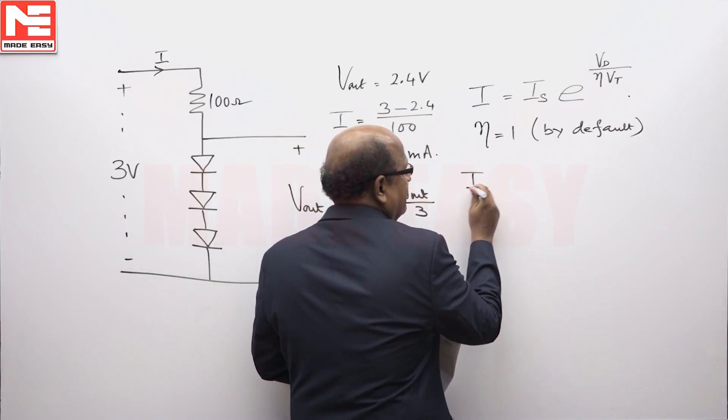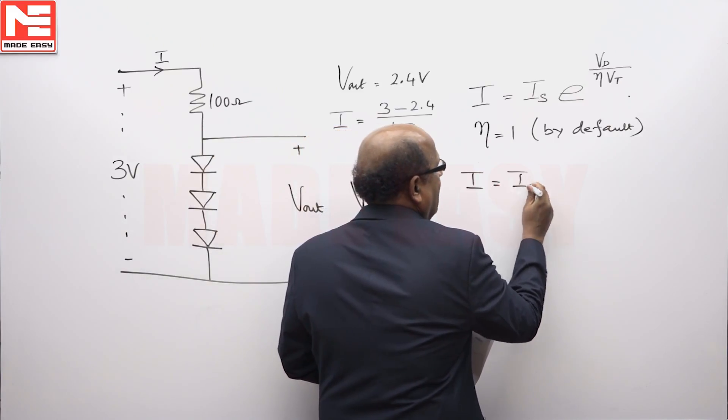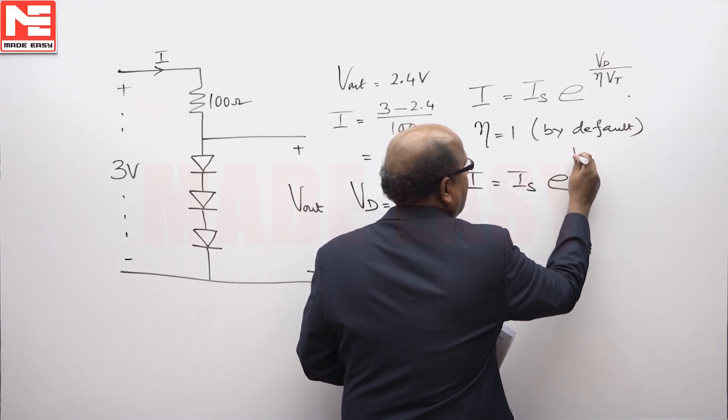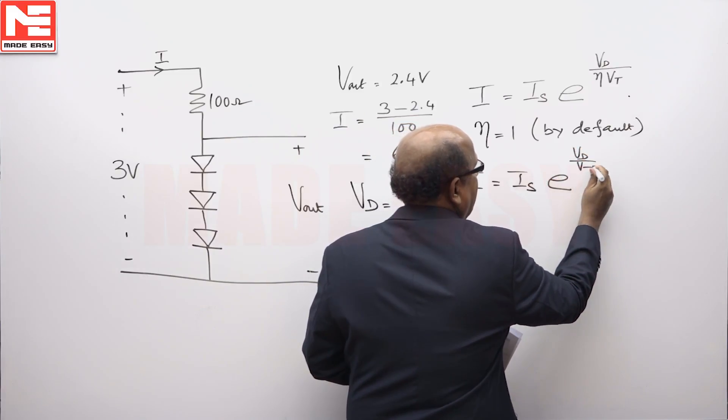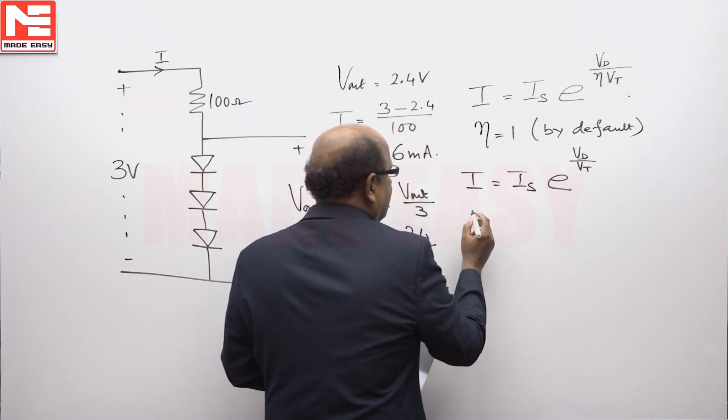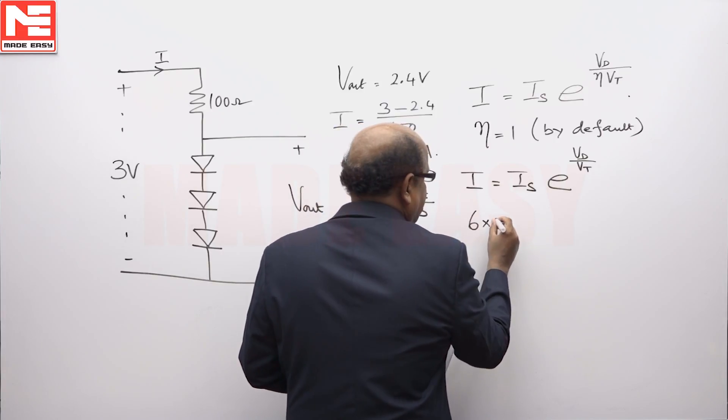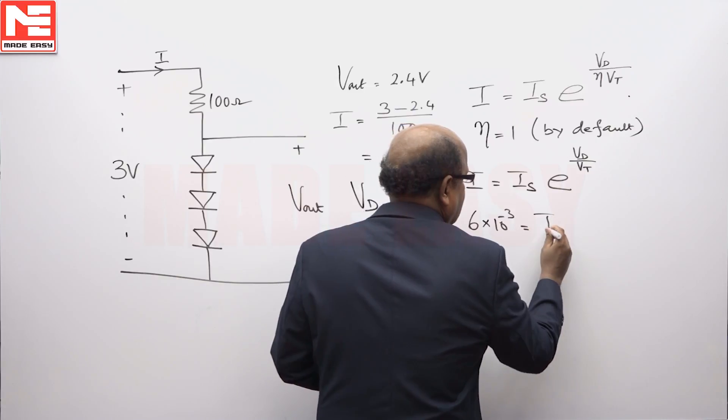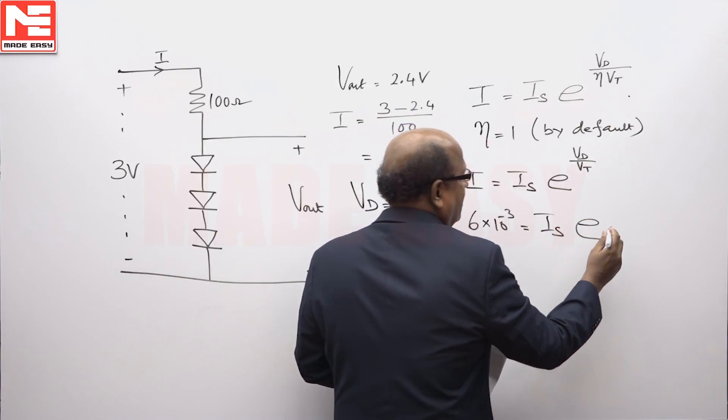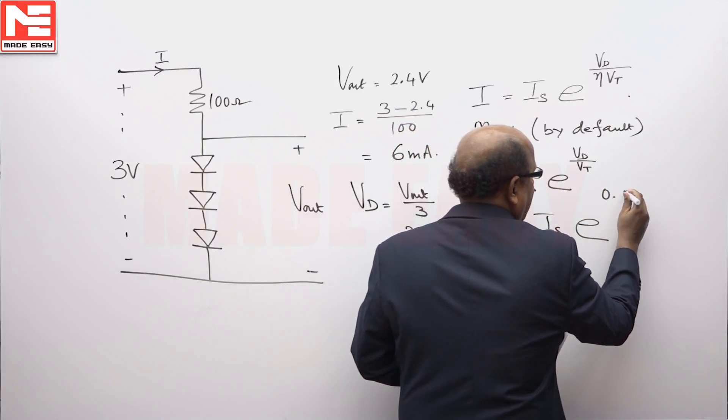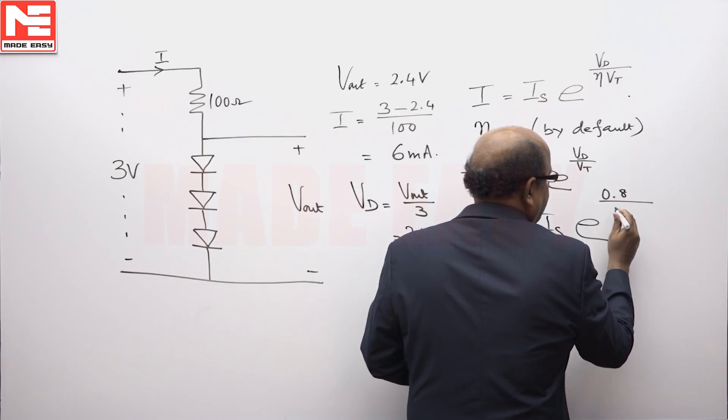We can now consider I equals I_s times e to the power V_d by V_t. Applying current I of 6 milliamperes, this is equal to I_s times e to the power 0.8 volts divided by V_t.